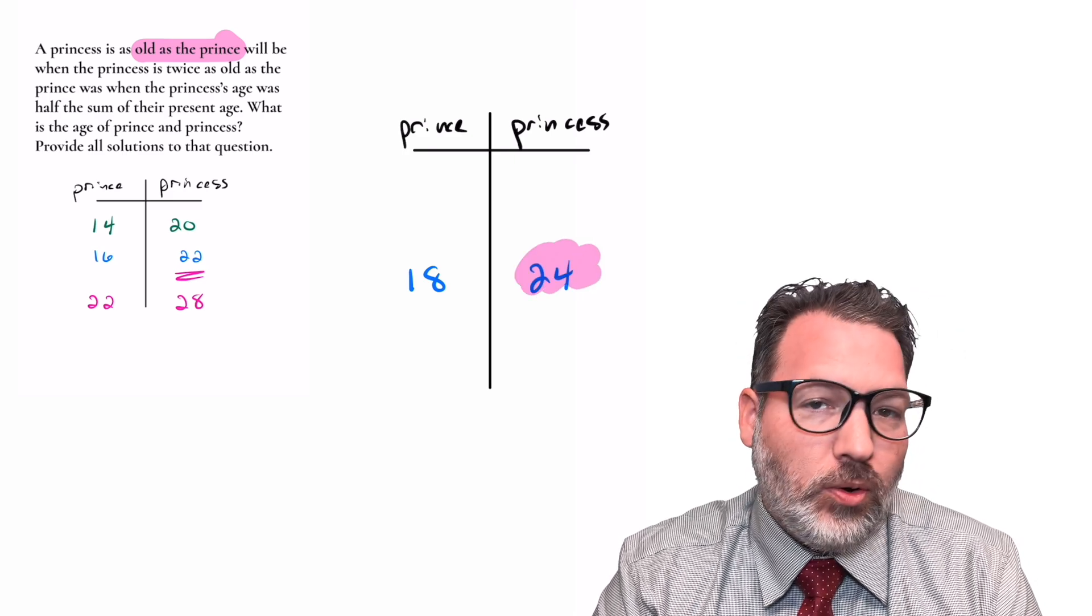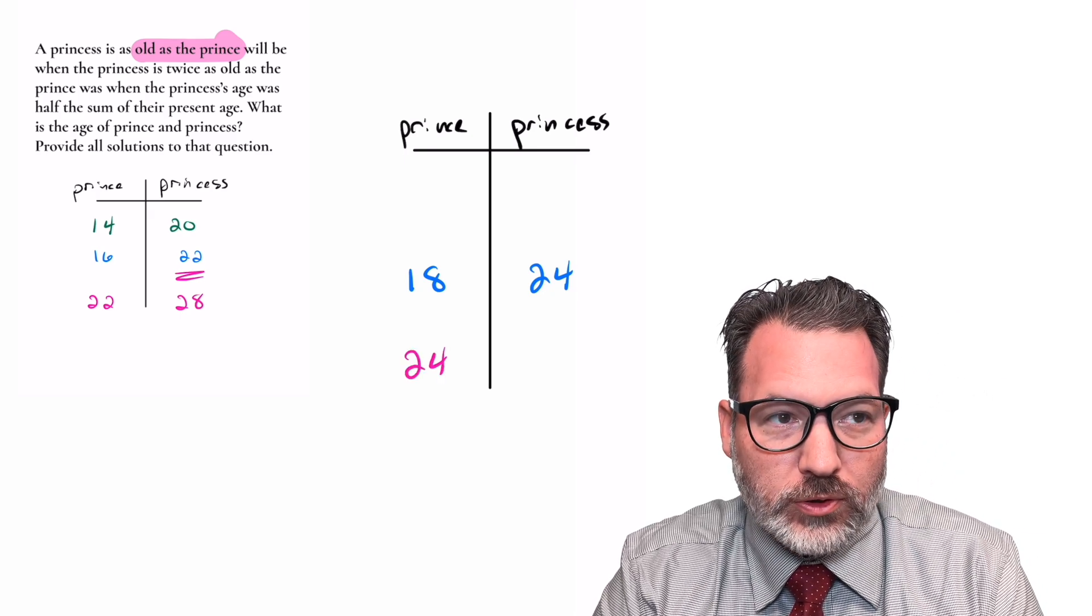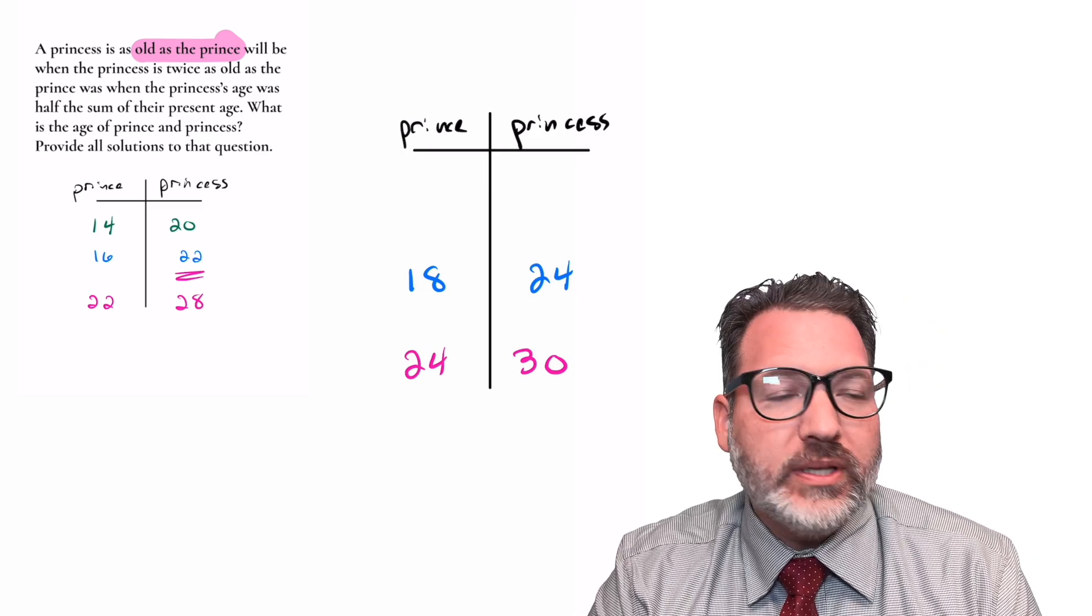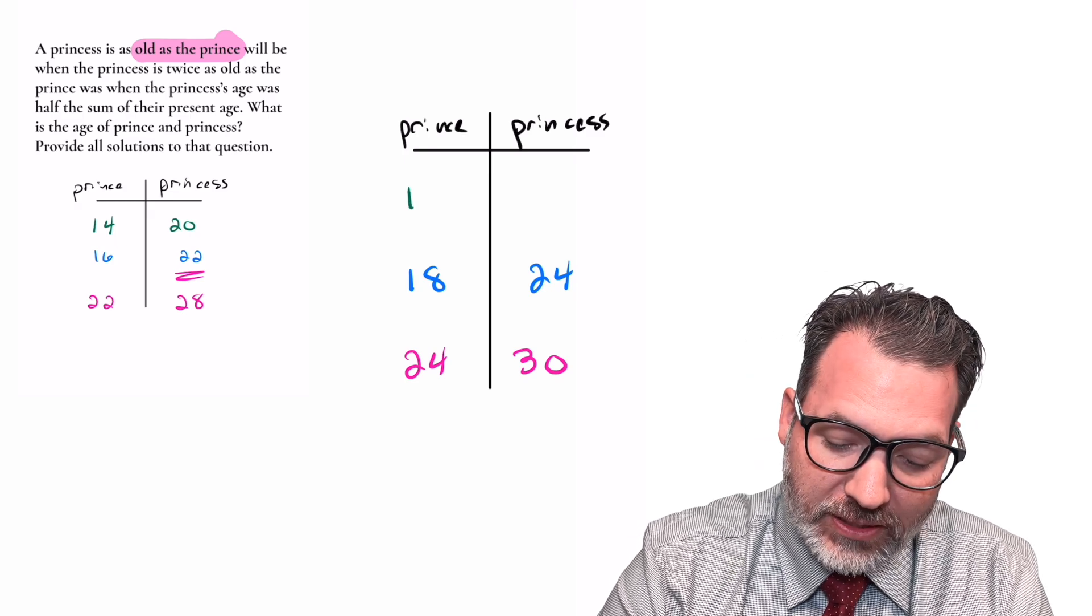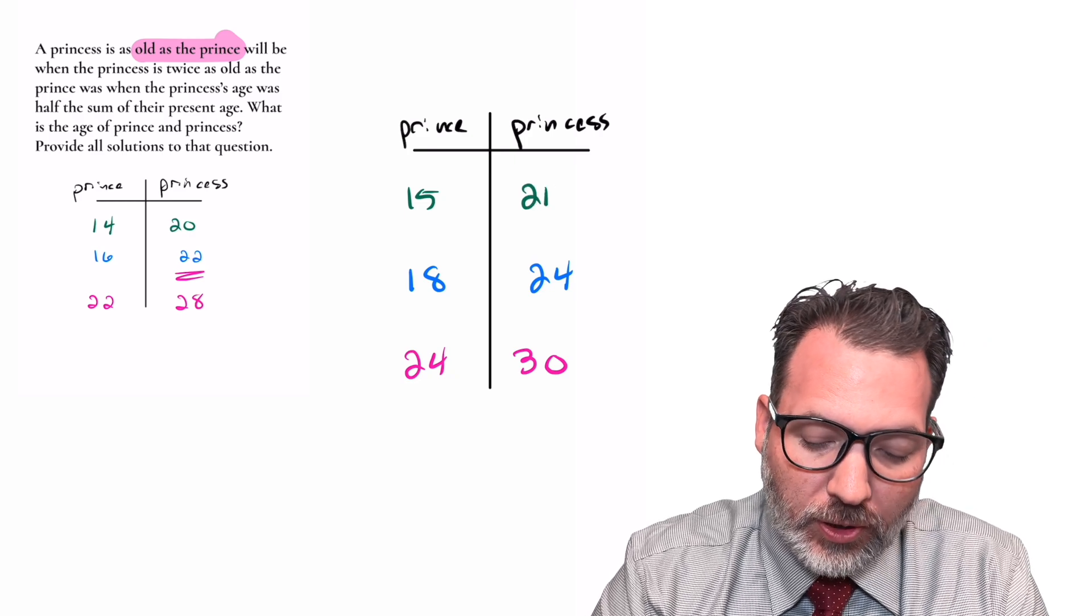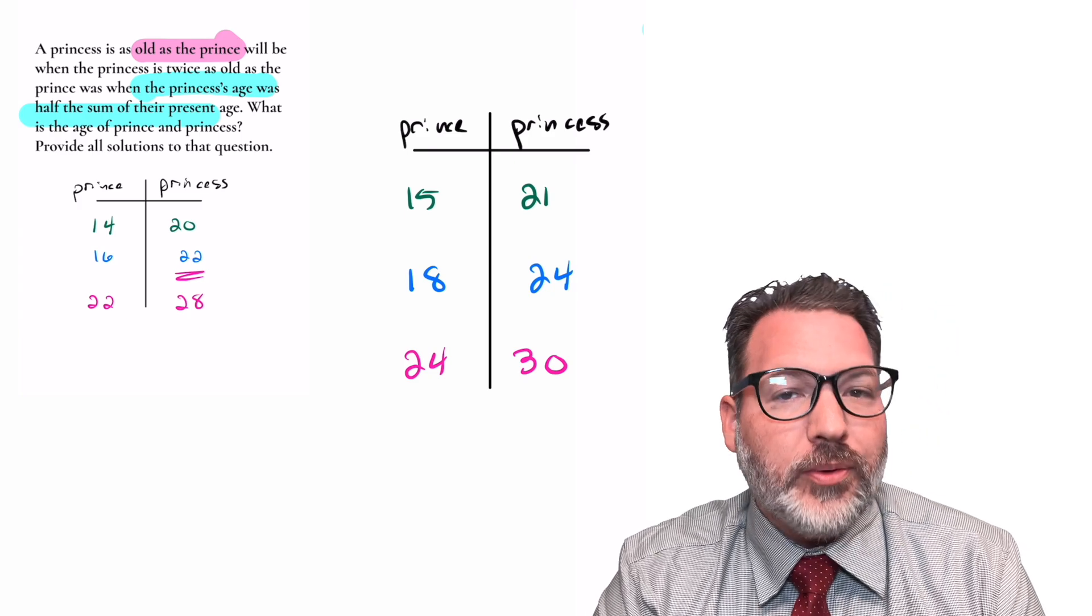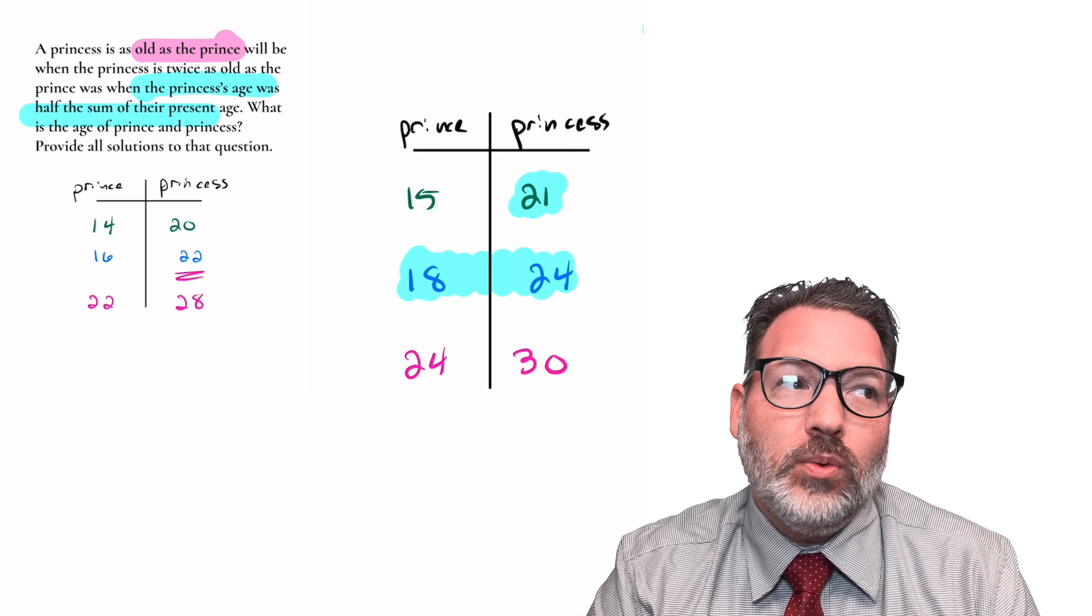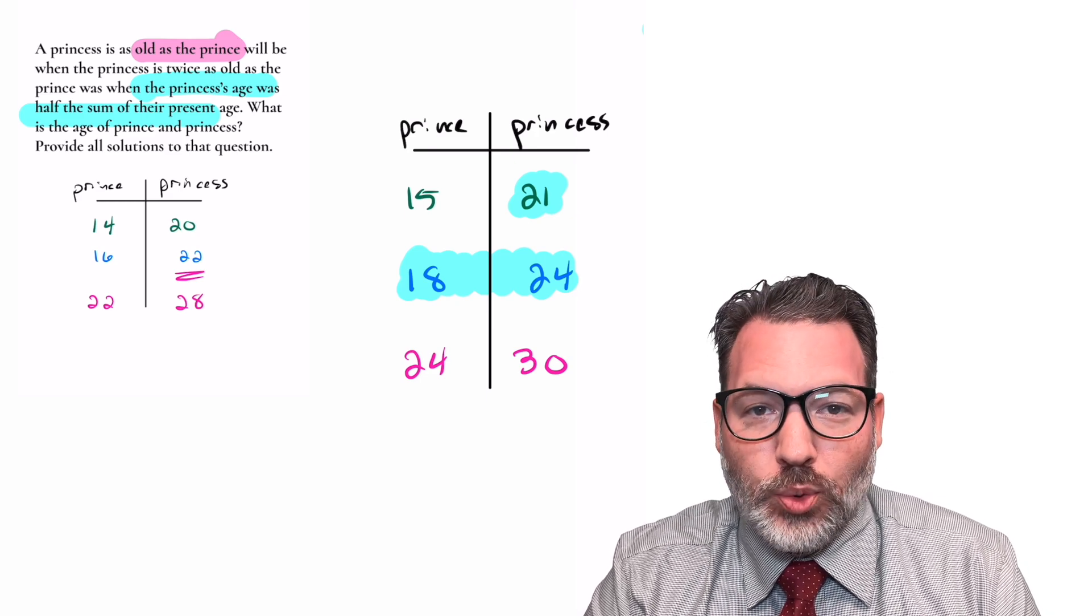The princess is as old, so she's 24 right now, as the prince will be, so he's 24 at some future time. And remember, they're always six years apart, so she's 30 at that time. When the princess is twice as old as the prince was, so again, 30 is twice as old as 15, and sometime in the past, the prince was 15. Again, six years apart always, so the princess at this time is 21. And what was the clue in the question? The princess's age was supposed to be half the sum of their present ages. Well, 18 plus 24 is 42, and half of 42 is indeed 21. Yes, we've done it.